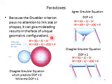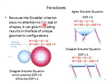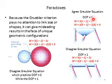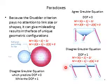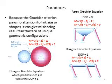Grubler's equation focuses on the number of links and joints and never pinpoints the shape and size of those links and joints. Therefore, Grubler's equation is sometimes not able to predict the actual degree of freedom of a mechanism. The first system is a classical example where Grubler's equation can easily obtain the correct degree of freedom, but for the second and third cases Grubler's equation is no longer suitable to predict the number of degrees of freedom. Thank you.